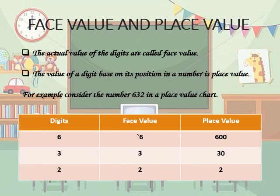Our next topic is face value and place value. The face value of a digit in a number is the actual value of the digit, and the place value of a digit is based on its place or position. For example, take the number 632. The face value of 6 is 6, but the place value of 6 is 600. The face value of 3 is 3 and the place value of 3 is 3 tens, that is 30. The face value of 2 is 2 and the place value is 2 ones, that is 2.